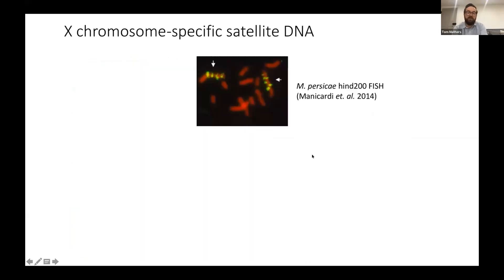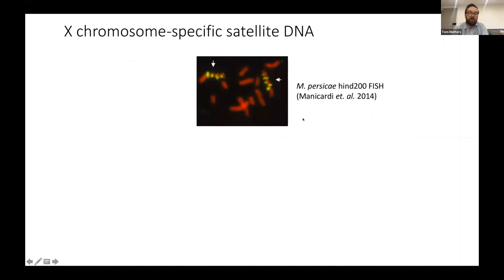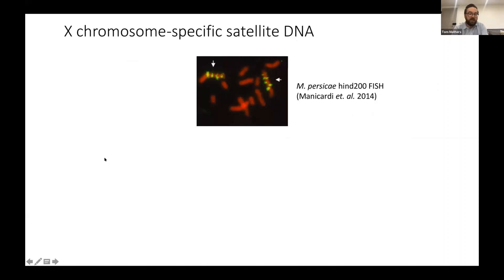Given this high quality assembly, we also looked for some interesting features of aphid genomes. We know from older work that specific satellite DNAs are associated with the X chromosome in very heterochromatic regions. We looked for the HIN200 sequence, which has been mapped in Myzus persicae before, and indeed we find it located on scaffold one — our X chromosome — in four bands.